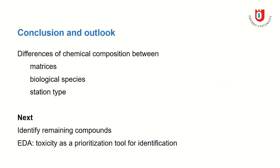So overall, we saw that there is a difference in chemical composition between the matrices, between the biological species and between the station types. And the next steps will be to identify the remaining compounds and to do effect-directed analysis, to look at toxicity as a prioritization tool for identification.